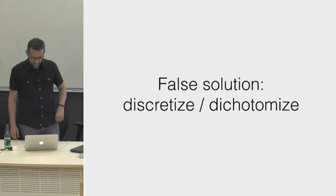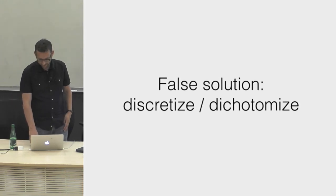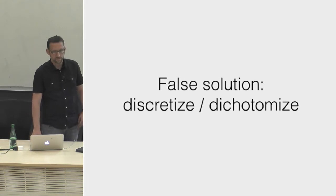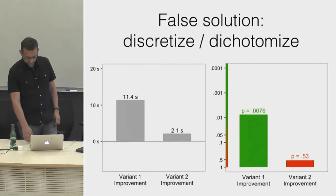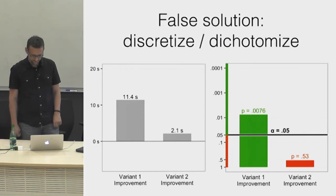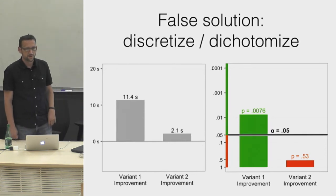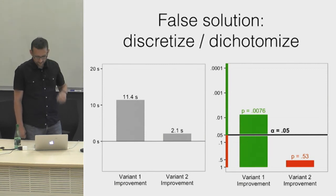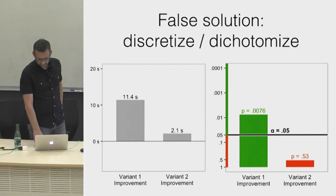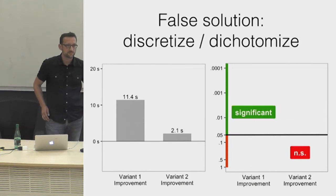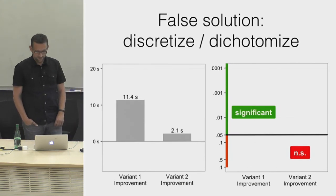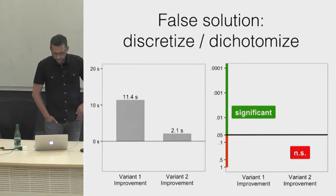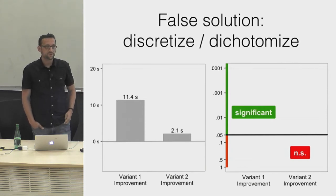I will start with what I think is the worst solution: to discretize or dichotomize the results of your statistical analysis. There is something people like to do to help interpret p-values — they set an arbitrary but conventional threshold of 0.05, labeling everything below as 'significant' and everything above as 'non-significant.' The problem is that you are throwing away lots of data, and it doesn't really stabilize the dance.